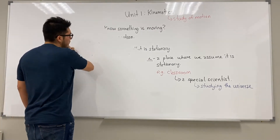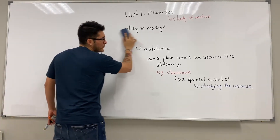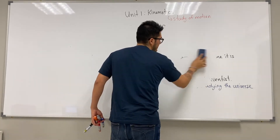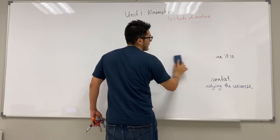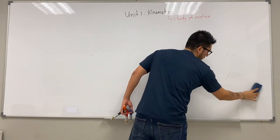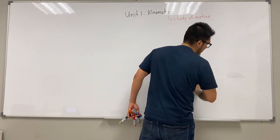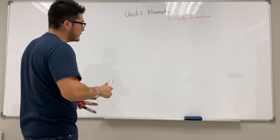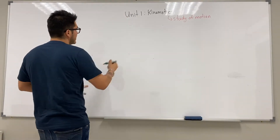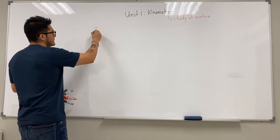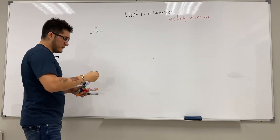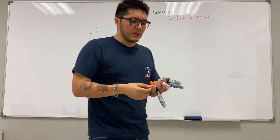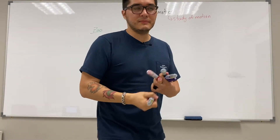Think of the Magic School Bus as a hoverboard in a classroom and we're going to go visit the zoo. Why are we going to the zoo? Because we want to go study motion. So what do we expect to see at the zoo? At the zoo, we're going to go and try to observe a cheetah.